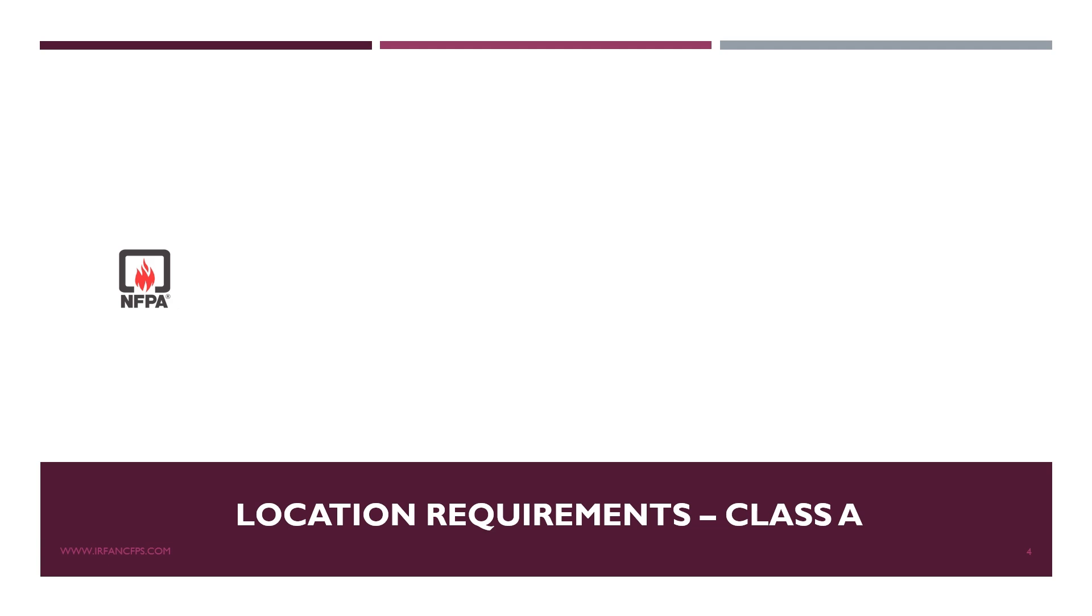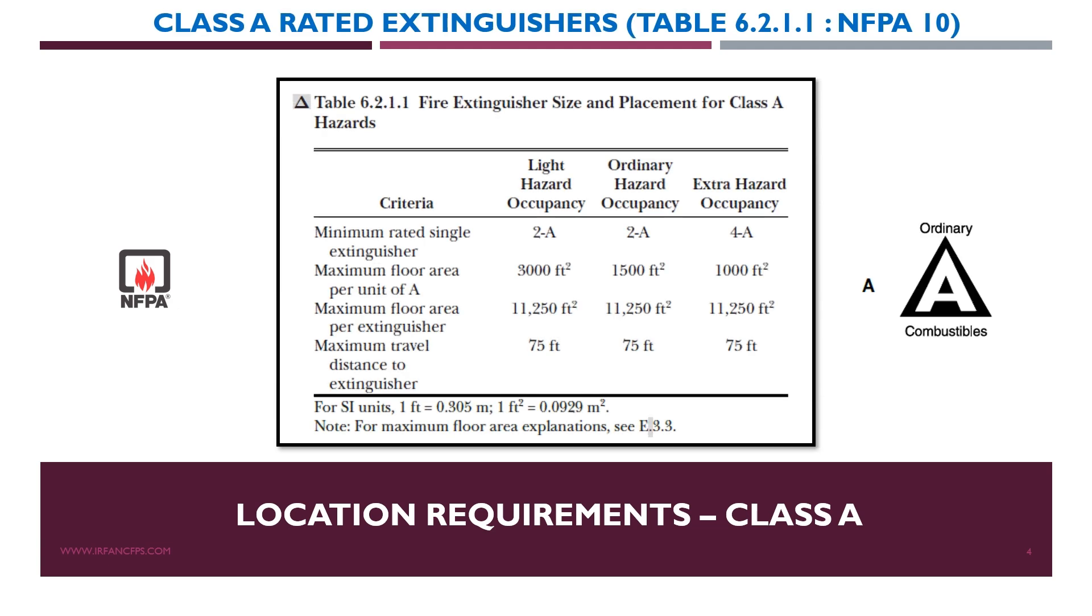So I have extracted a table from NFPA 10 which is referring to the class A hazards. So basically we will discuss about the upper portion later on. But for now just remember the maximum travel distance to fire extinguishers shall not be more than 75 feet or 22.9 meters for any hazard occupancy. See the definition of light hazard occupancy, ordinary hazard occupancy and extra hazard occupancy for extinguishers is different than the occupancies which we have defined in sprinkler system.